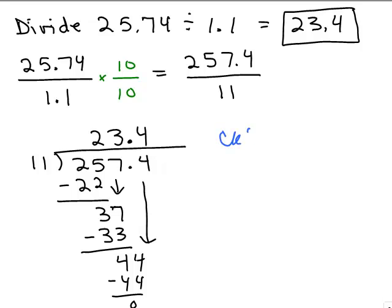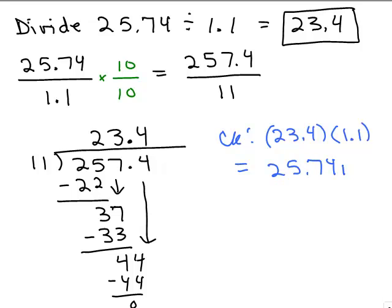Let's check the answer. To check, you take your answer times the 1.1 and make sure you get back to 25.74 — the original problem. So the question is what is 23.4 times 1.1? You could use any method you want: the lattice method, regular multiplication, or a calculator. You multiply this out and you get 25.74. I'm not going to do the multiplication on this video because we're concentrating on division.